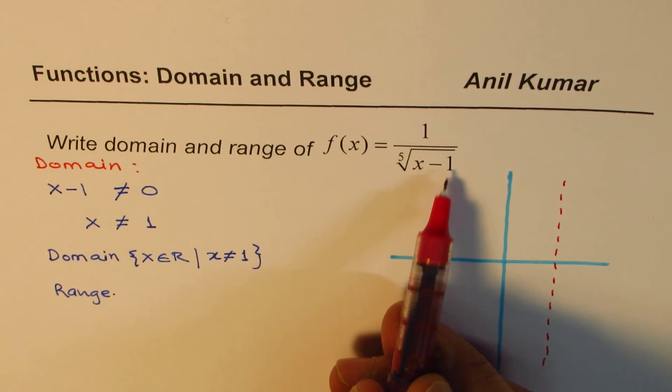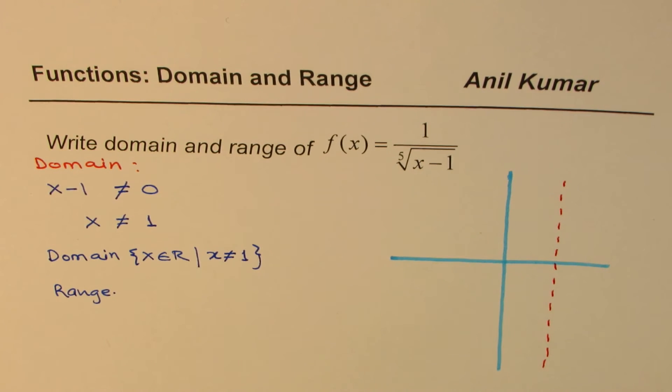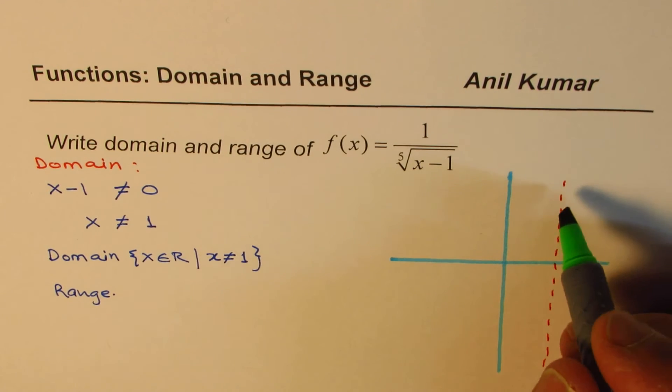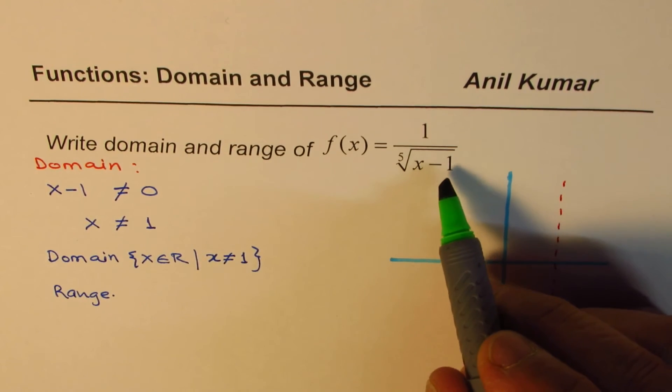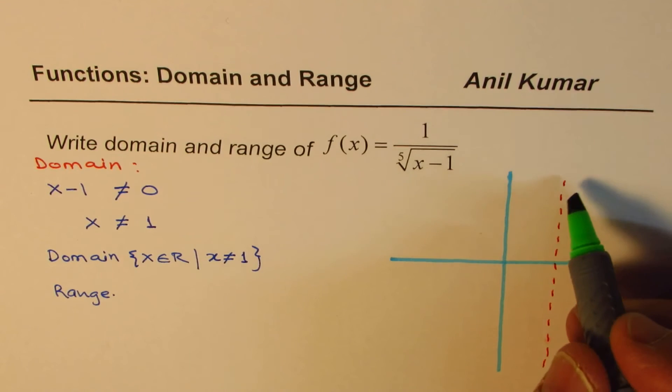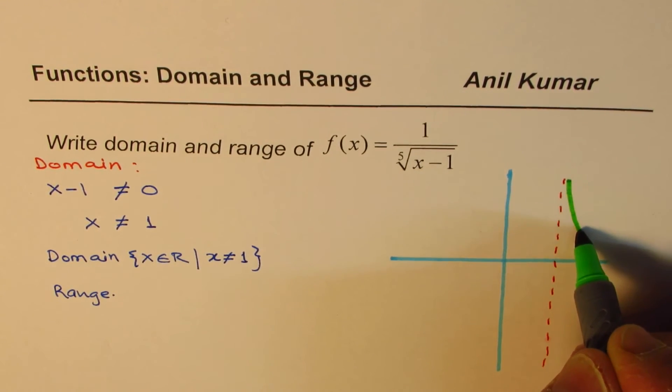If the value of x is slightly more than 1, in that case, it is going to be positive. Since it is going to be positive, and if it is very close to 1, let's say 1.1, in that case, it will be a positive big value. So the asymptote will reach like this, and we may have a function which is kind of like this.